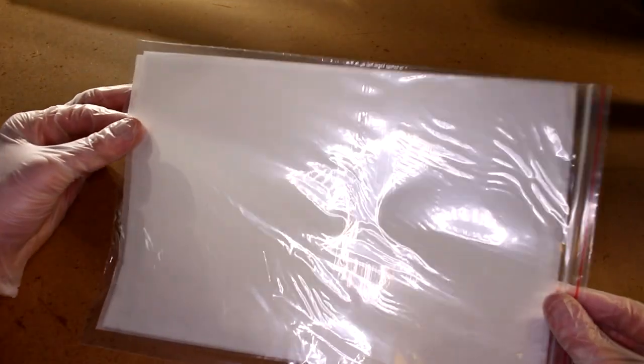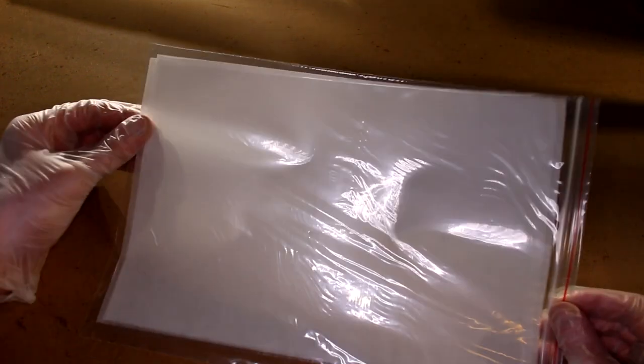One thing I'm worried about is the thinner sheet tearing, especially on my build plate which isn't very flat, but here it goes.